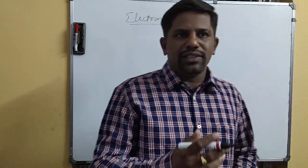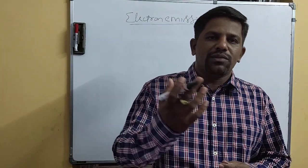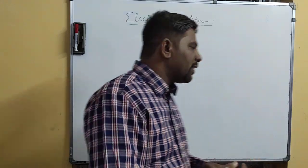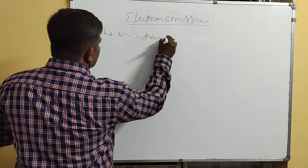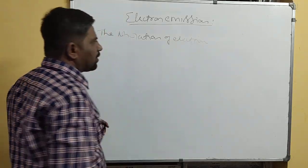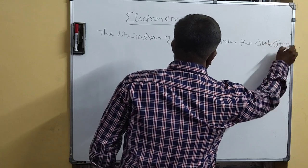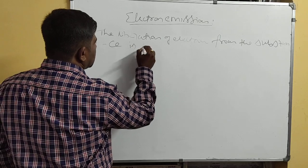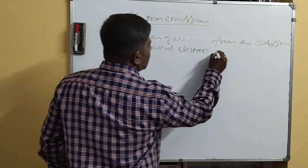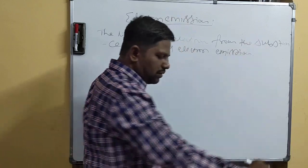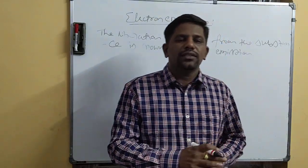What do you mean by Electron Emission? That is the Emission of Electrons from the Metal Surface, or the Liberation of Electrons from the Metal Surface, is called as Electron Emission. The Liberation of Electrons from the Substance is known as Electron Emission.